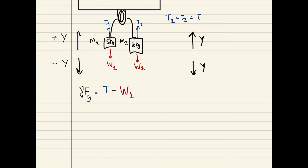Let's break this down further. Weight equals mass times gravity, and the mass we're talking about here is m1. So the net force in the y-direction for m1 is T minus m1g. That equation represents all the forces in the y-direction for this box.